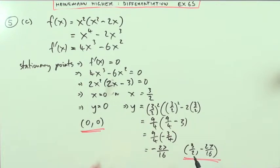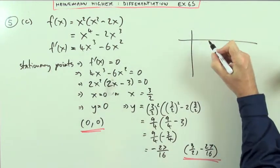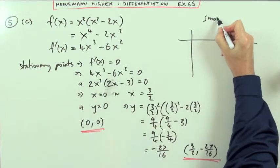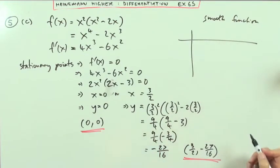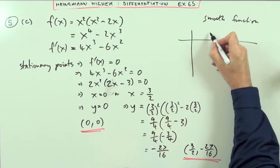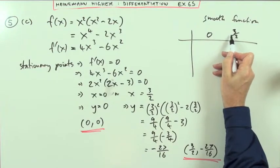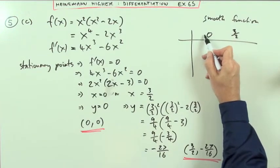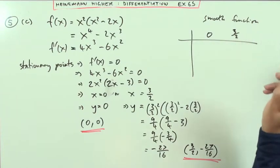Now, what's the nature of it? I'll put my nature table up here. So I've got a nature table. Now, I know it's a smooth function. So nothing nasty will happen between these turning points. So whatever happens at 0, when it leaves 0, it'll continue to do that until it hits another turning point. Whatever was happening before, happened forever. Whatever happens after, happens forever.